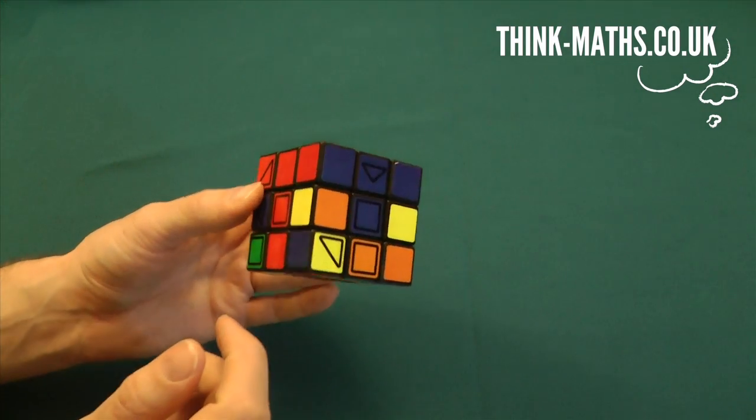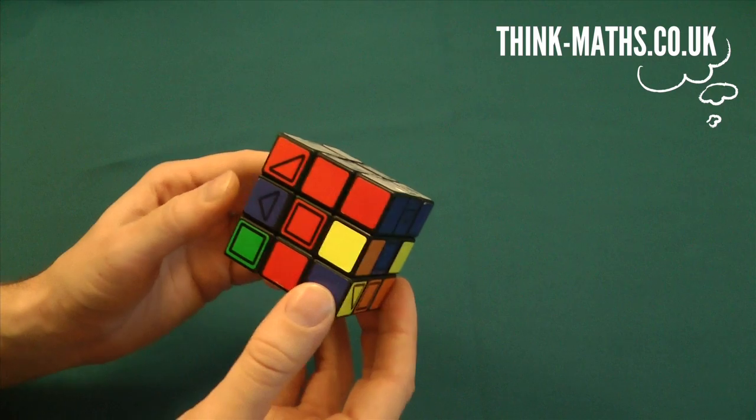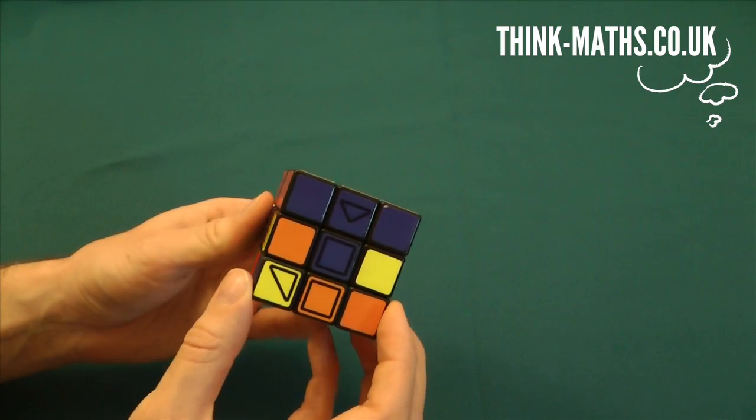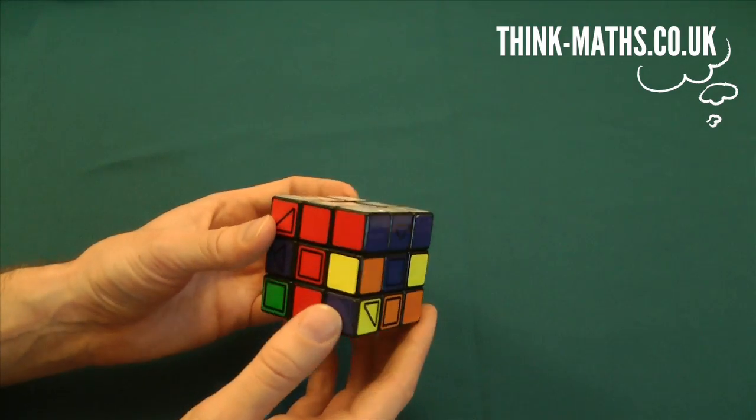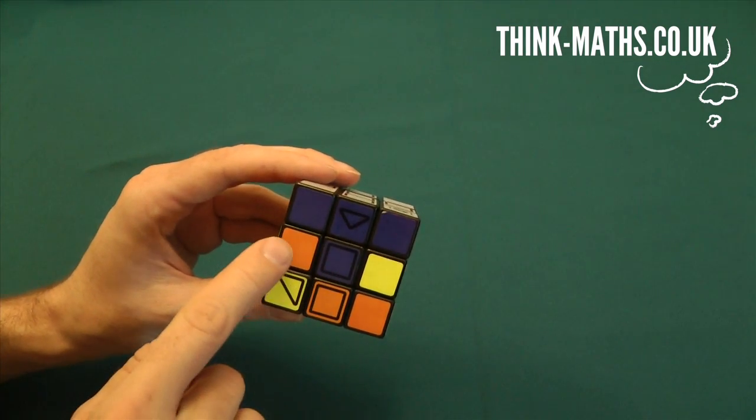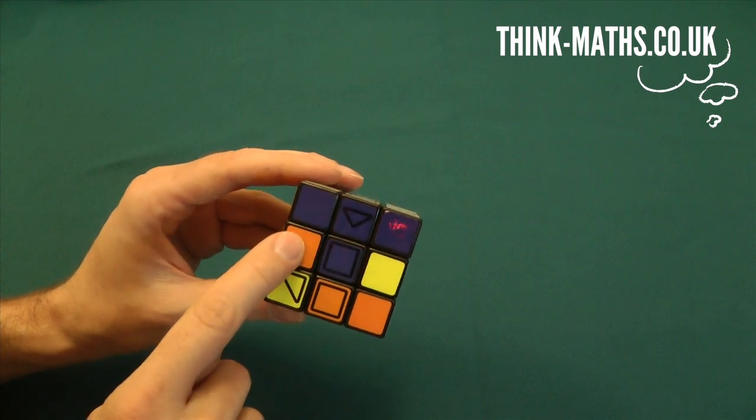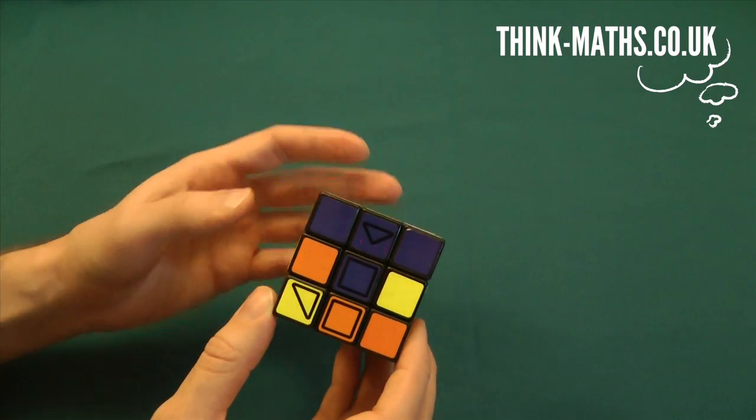We're now going to do the edge swap sequence. And there are actually two edge swap sequences. There's edge swap one and edge swap two. And to move this up into place, you start with the Rubik's Cube facing you so that the edge where you want it to end up is on your left. And then you do, well, in this case, we're going to do edge swap two first.